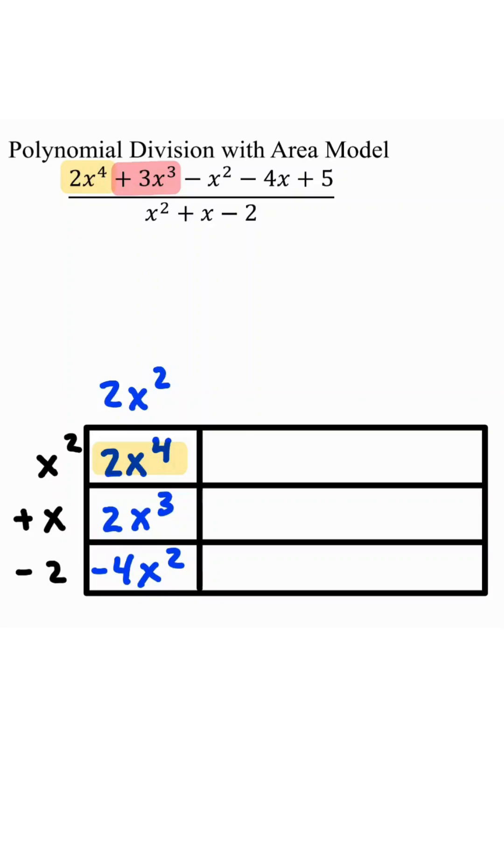Now we need a 3x cubed. We already have a 2x cubed, so we need another x cubed. So we'll write right here. Factor out the x squared away from x cubed, we're left with positive x.